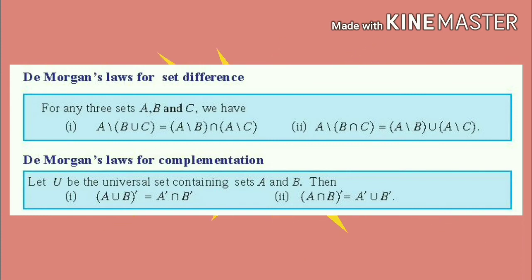let U be the universal set containing sets A and B. Then (A union B) the whole complement is equal to A complement intersection B complement. The second one is: (A intersection B) the whole complement is equal to A complement union B complement.